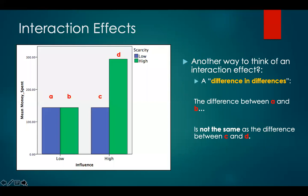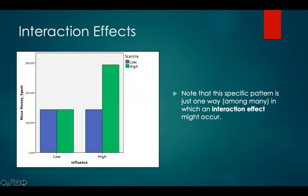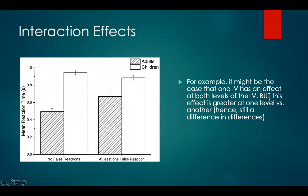Another way to think about an interaction effect is as a difference in differences. The difference between A and B is not the same as the difference between C and D. Or, the difference between A and C is not the same as the difference between B and D. For example, it might be the case that one IV has an effect at both levels of the other IV, but this effect is greater at one level versus another — it's still a difference in differences. This difference is larger than that difference, but the difference is in the same direction.